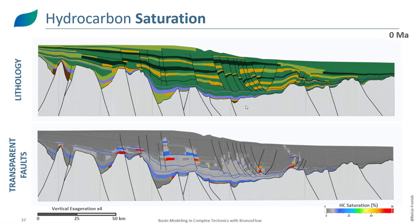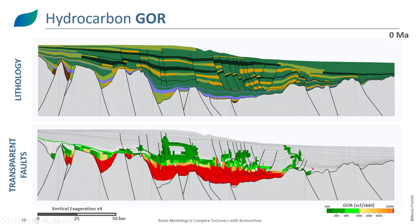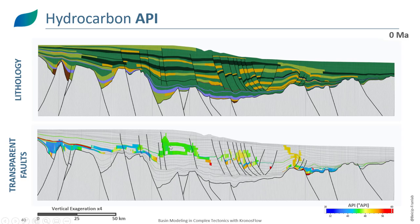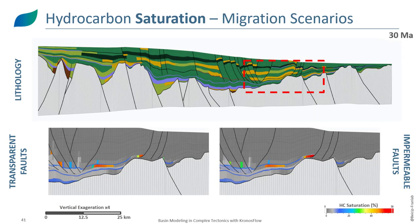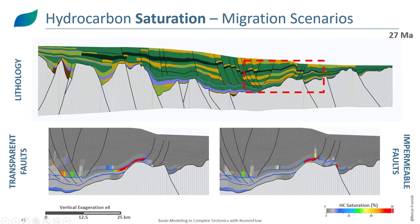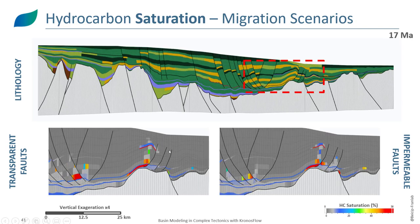For the saturation at present day, derived from the transparent fault pressure regime, we identify several accumulations of interest. Because we ran a compositional migration, we also understand the quality of hydrocarbons — including GOR, phase, and API degree. Comparing transparent versus impermeable fault scenarios: when faults become active, we see different behavior — in the transparent case, hydrocarbons on both sides of faults are remobilized and migrate to the top of the structure.